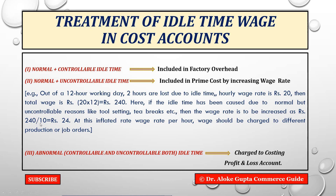The inflated wage rate is calculated as total wage ÷ effective productive hours: ₹240 ÷ 10 hours = ₹24 per hour. The wage rate is increased from ₹20 to ₹24 because, due to 2 hours of uncontrollable idle time, the organization must recover the cost of 12 hours through only 10 hours of production. This ₹24 inflated wage rate is charged to different jobs as part of prime cost, allowing the organization to recover ₹240 through 10 productive hours.